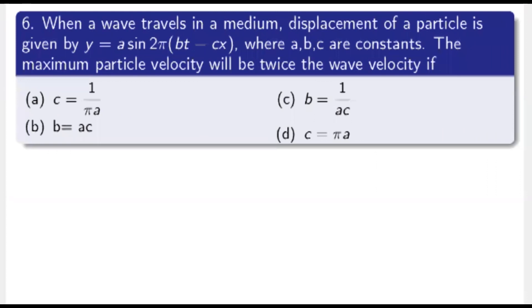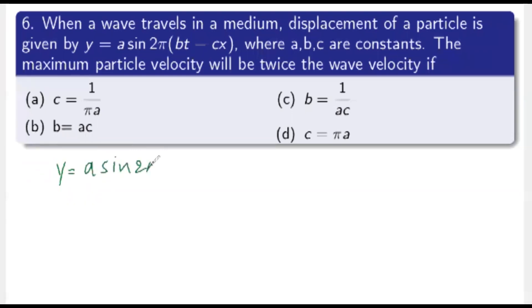Next question: when a wave travels in a medium, the displacement of a particle is given by y = a·sin(2π(bt - cx)), where a, b, and c are constants. The maximum particle velocity will be twice the wave velocity if — what is given? The displacement of the particle is y = a·sin(2π(bt - cx)).